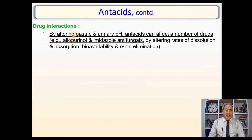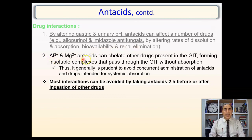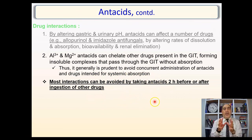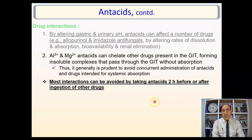Regarding drug interactions: by altering gastric and renal pH, antacids can affect numerous drugs such as allopurinol and imidazole antifungals by altering rates of dissolution, absorption, bioavailability, and renal elimination. In addition, aluminum and magnesium antacids can chelate other drugs — binding them and carrying them through the GIT into stool as complexes that pass without absorption. It is generally prudent to avoid concurrent administration of antacids with drugs intended for systemic absorption, spacing them two hours before or after taking any other drug.